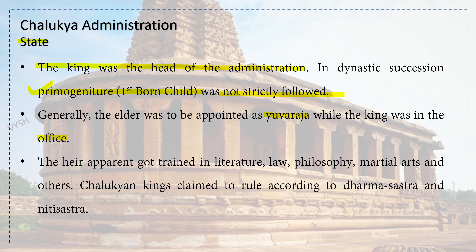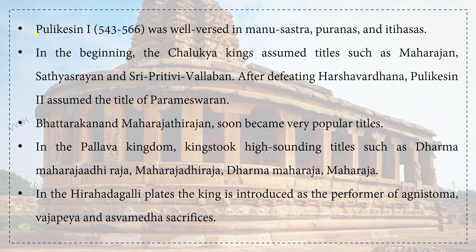The heir apparent got trained in literature, law, philosophy, martial arts and others. Chalukyan kings claimed to rule according to Dharma Shastra and Niti Shastra. Pulakeshin I was well versed in Manu Shastra, Puranas and Itihasas. In the beginning, Chalukyan kings assumed titles such as Maharajan, Satyasrayan, and Sri Prithvi Vallabhan. After defeating Harshavardana, Pulakeshin II assumed the title of Parameshwaran. Bhattara Kananda Maharajadirajan soon became very popular titles.